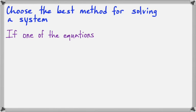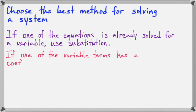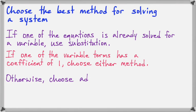So here's what I do. If one of the equations is already solved for a variable, then use substitution because it's already started for you. If both of your equations are in standard form but one of the variables has a coefficient of 1, then you can choose either method, but otherwise choose the addition method.